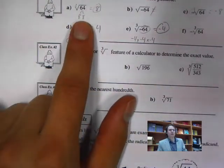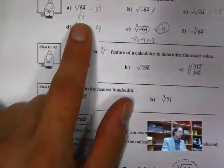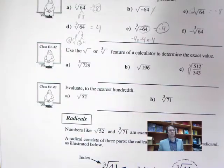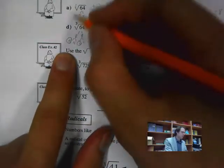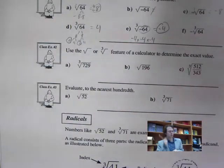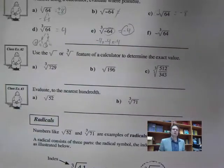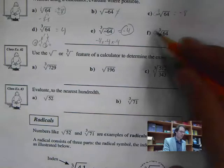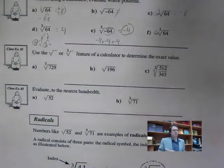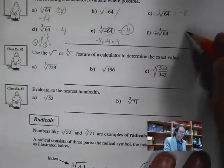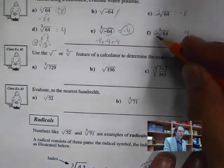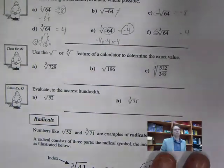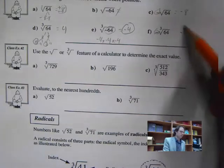For the square root of 64, the answer could also be plus or minus 8, because negative 8 times negative 8 is 64. For the negative cube root of 64: the cube root of 64 is 4, multiplied by negative 1, giving negative 4.